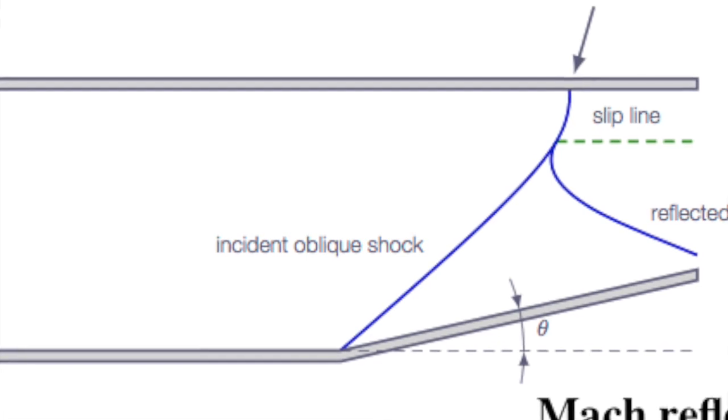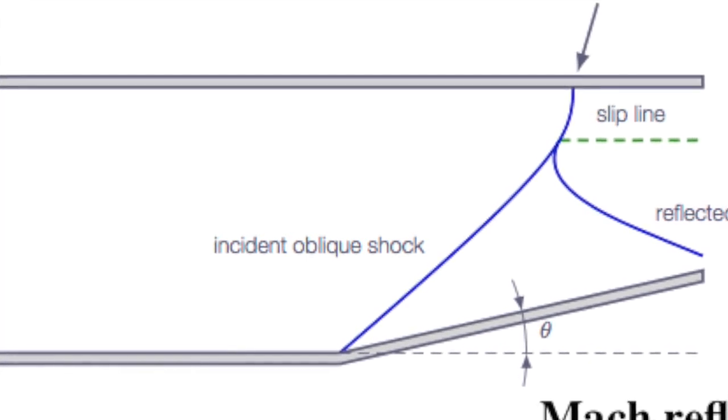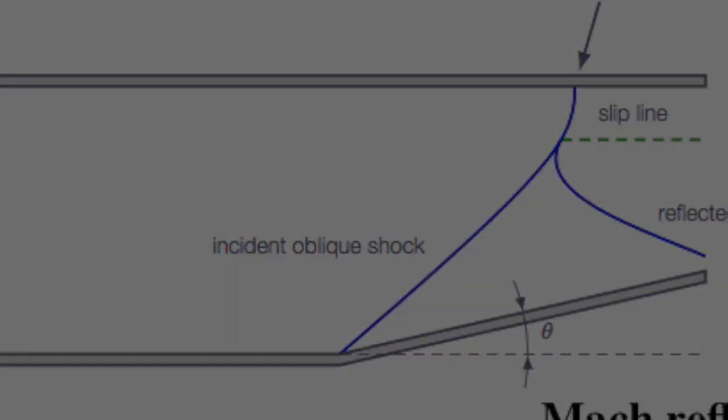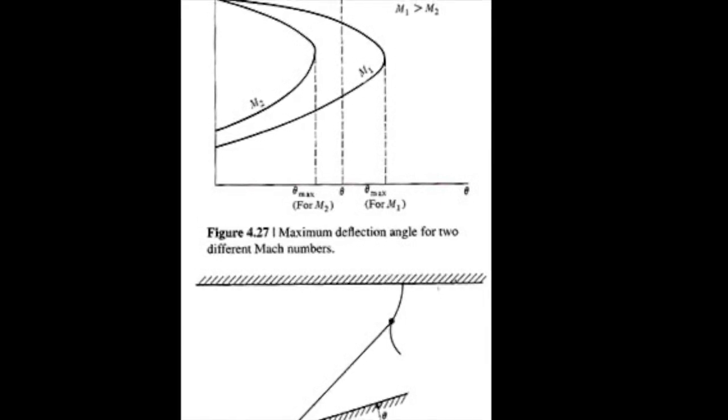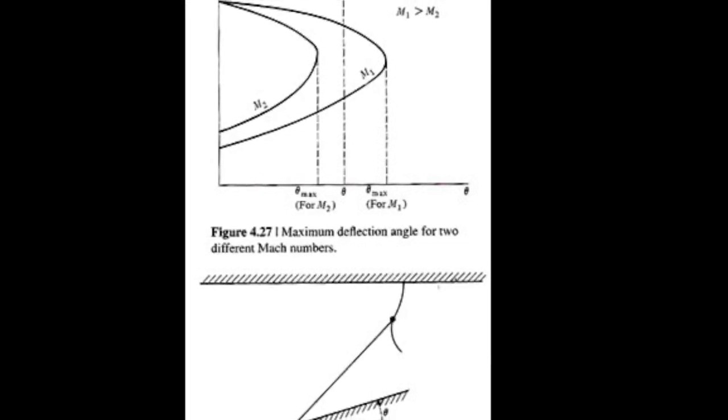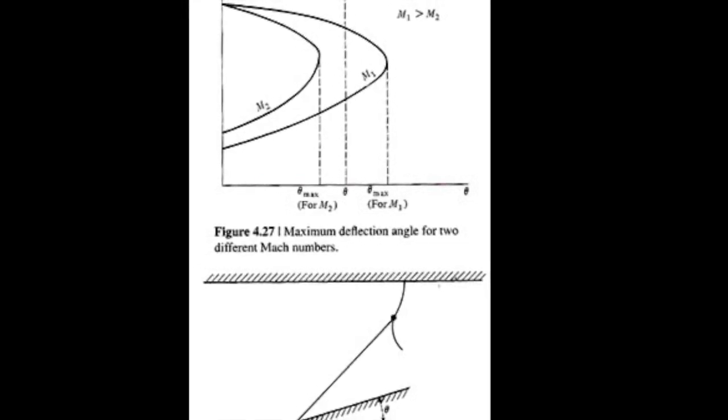On the other hand, when the flow in region 2 at Mach number M2 wants to again deflect through the angle theta via the reflected shock, it finds that theta is greater than theta max for M2 and regular deflection is not possible.